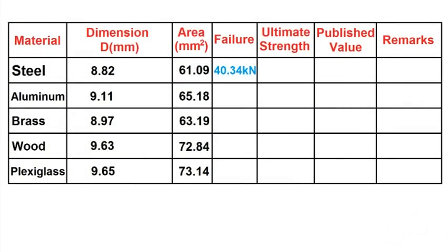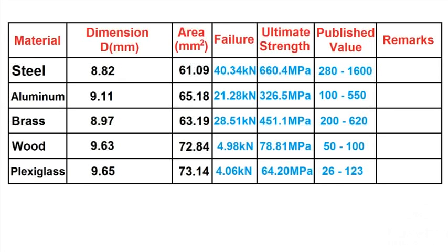When all the tests are done, calculate the ultimate strength of each material by dividing the failure load by the cross-sectional area. Finally, compare the gathered values of ultimate strength with published values for those same materials.